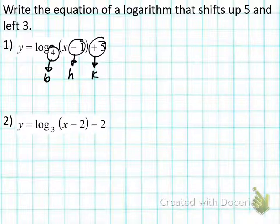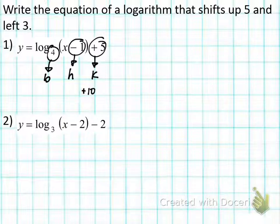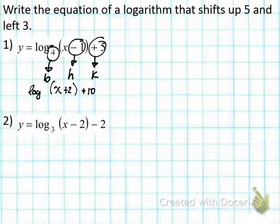We need to follow suit and do what it says. It says shift the logarithm up five, so I go to my K first. To shift it up, I add five to K — five plus five is ten — so I write ten down here. Then it says shift left three. To shift the graph to the left, I increase H by three: negative one plus three is two. I write plus two, then bring down the rest of the problem: log base four. Make sure you copy the same base — don't assume it's a common log. That's how you do number one.